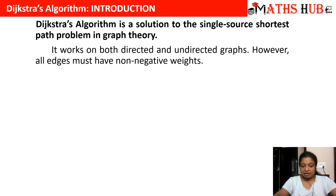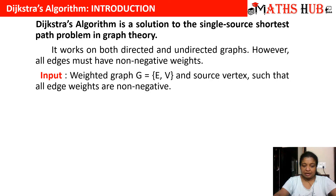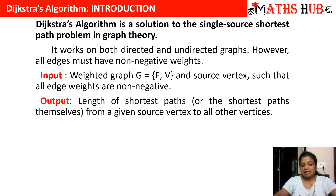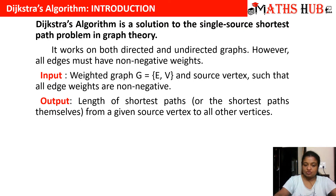In this algorithm, what is our input? The input is a weighted graph, meaning every edge has some positive weight. And what is the output? The output is the length of the shortest path from a given source vertex to all other vertices. That means if a source vertex has been identified in the graph, we can calculate the length of the shortest path from that source vertex to every other vertex present in the graph.